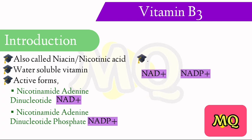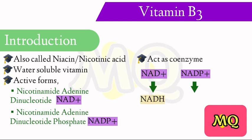NAD+ and NADP+ serve as coenzymes in oxidation and reduction reactions. The reduced forms of NAD+ and NADP+ are NADH and NADPH, respectively.